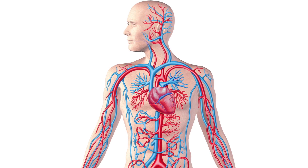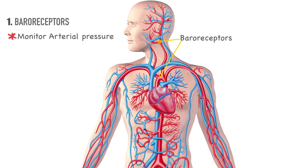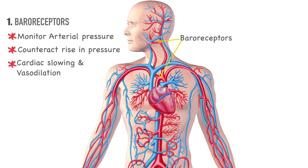Four major control systems play a major role in maintaining blood pressure. Number one: baroreceptors. These pressure sensors, located primarily in the carotid sinus, aorta, and the wall of the left ventricle, relay information to the brain so that proper blood pressure can be maintained. They counteract a rise in blood pressure by slowing the heart rate and promoting hormone secretions that target the blood vessel's smooth muscle to produce vasodilation.